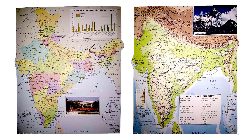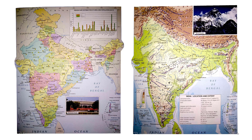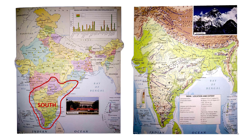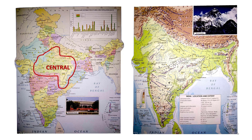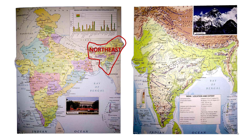We want to discuss the different regions of India, which are the North, the East, the West, the South, the Central, and the Northeast. We will group the states according to the region and discuss a little bit about each region's physical geography.